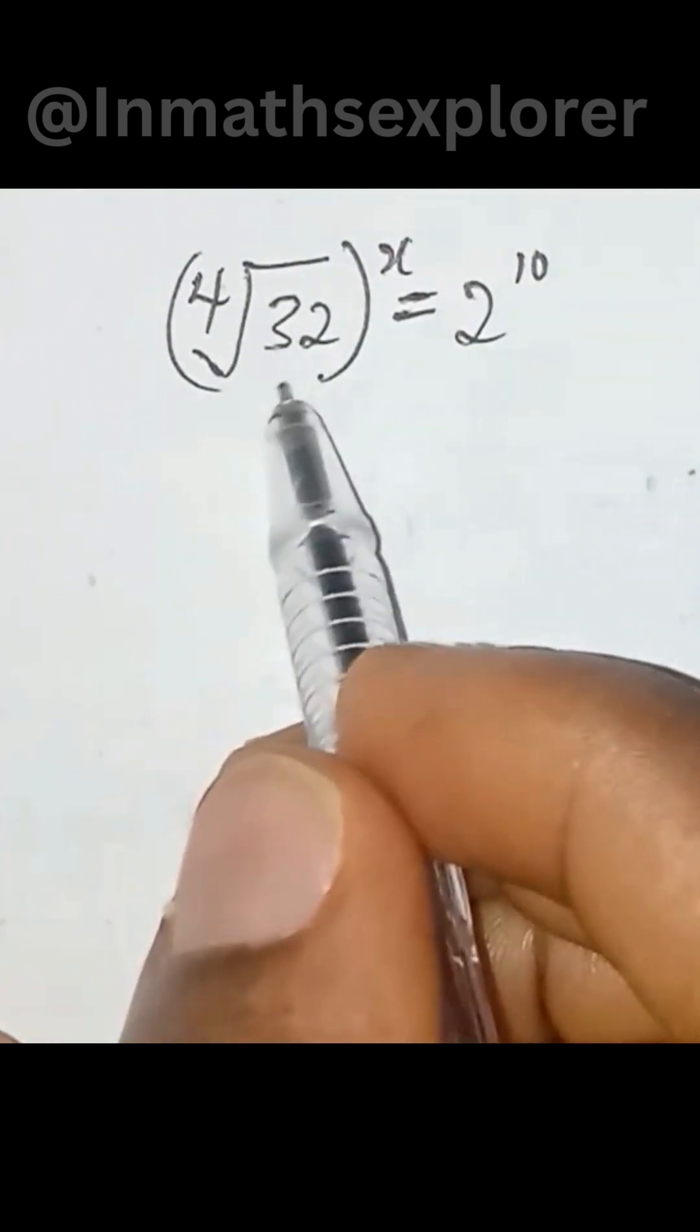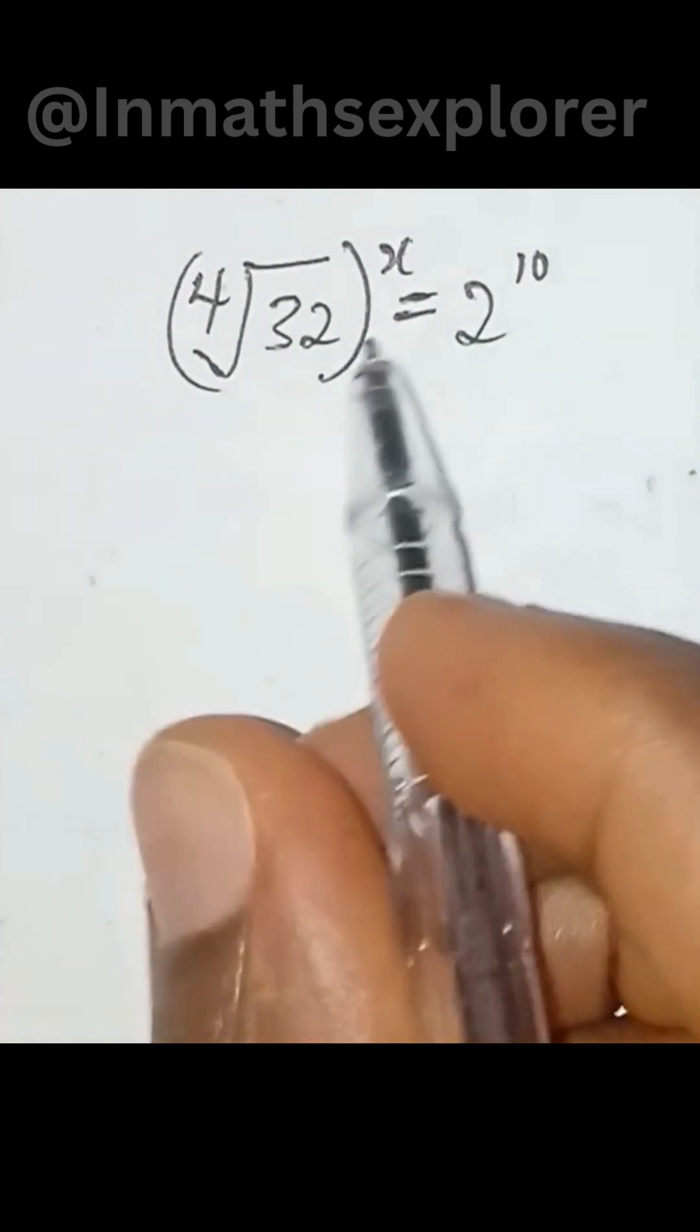Likewise, if you have 4th root of 32 to the bracket to the power of x equal to 2 to the power of 10.